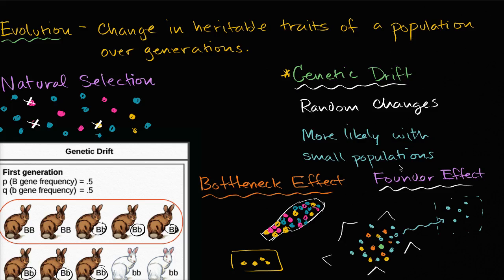Evolution and natural selection are often talked about hand in hand, but natural selection isn't the only mechanism of evolution. You also have genetic drift, which is not about selecting for favorable traits — it is about randomness.